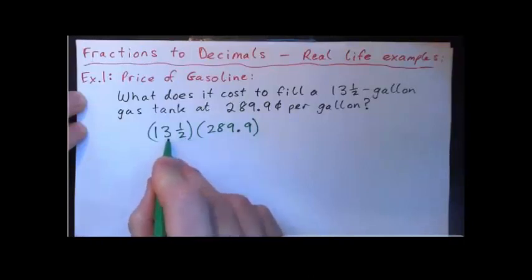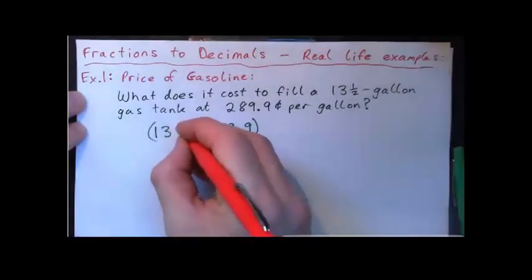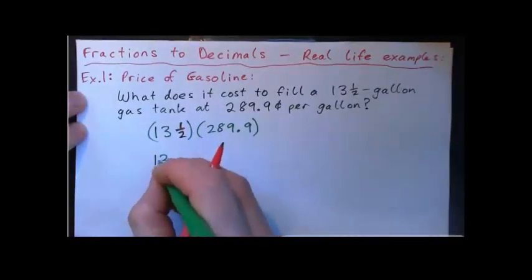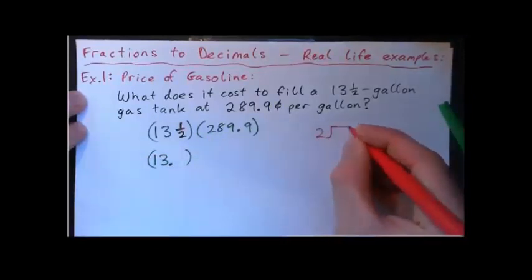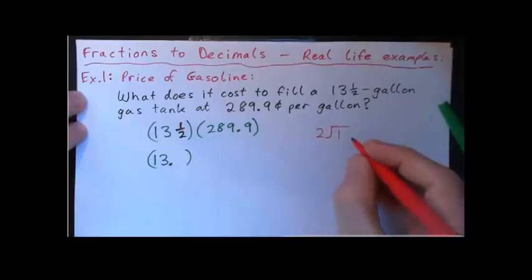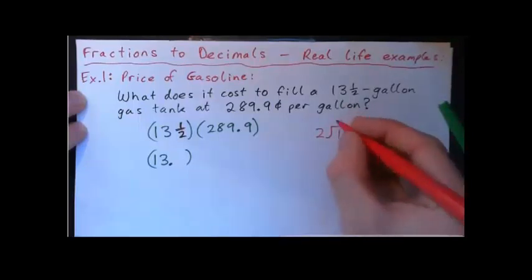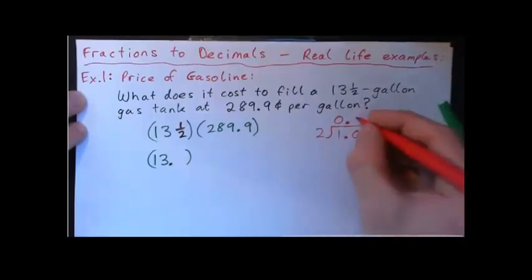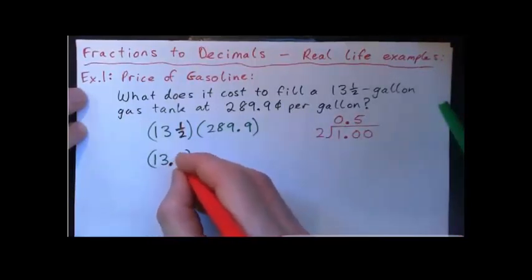And maybe it might be a good idea to just turn that into a decimal. So if I turn the half into a decimal, what do I get? One half is zero point — if you don't remember, all you've got to do is go two into one. Write that as 1.00. Two into one won't go, so put the decimal point up here. Two into ten goes five times. So one half is zero point five.